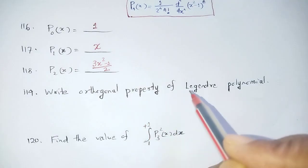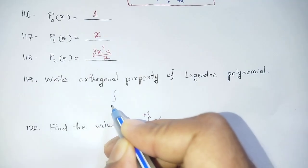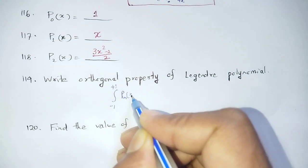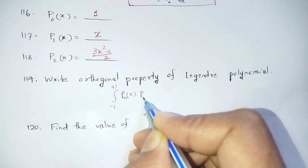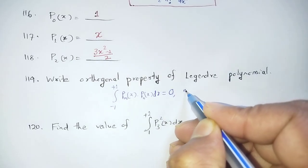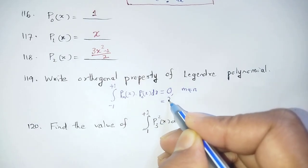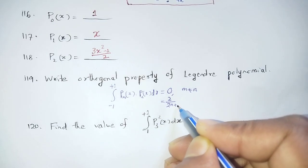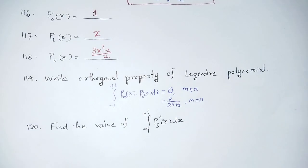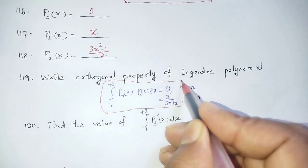Next question: Write the orthogonal property of Legendre Polynomial. The orthogonal property states: integration from -1 to +1 of Pn(x)·Pm(x) dx = 0 when m ≠ n, and equals 2/(2n+1) when m = n.